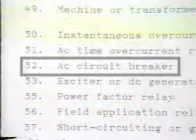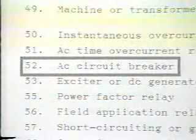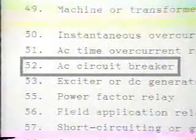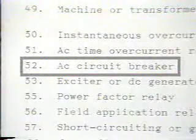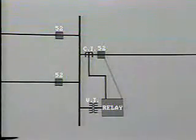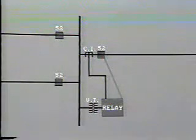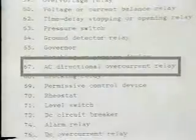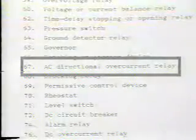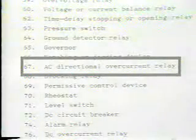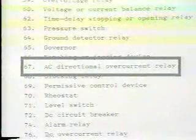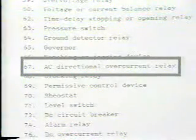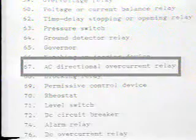The circuit breaker is represented by number 52, so we can place this into our elementary diagram. And supposing the protection relay is an AC directional overcurrent relay, this would be device number 67.